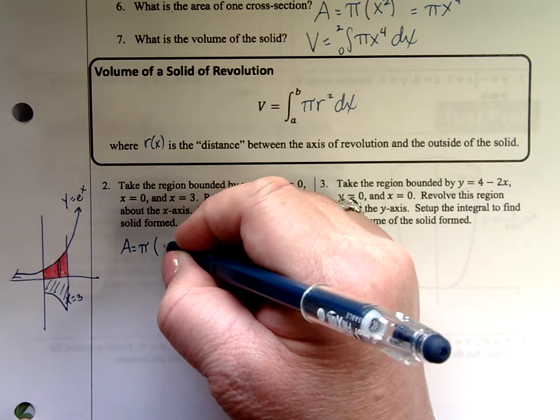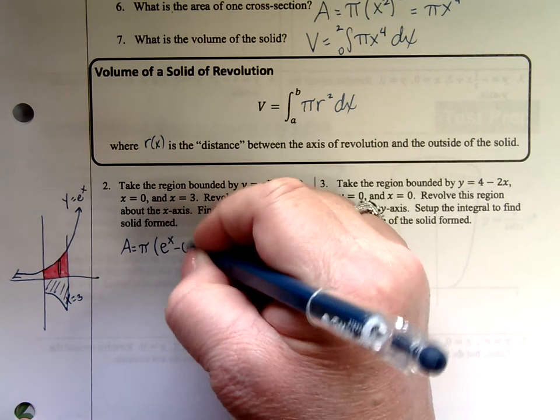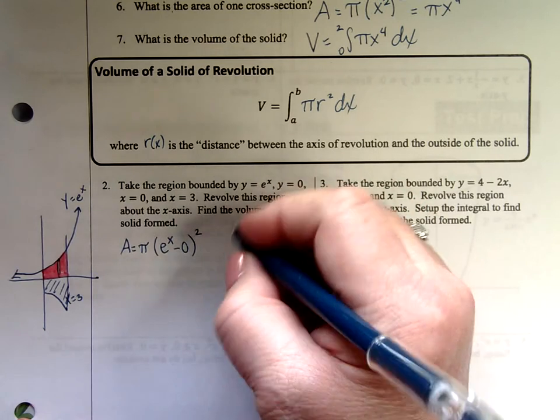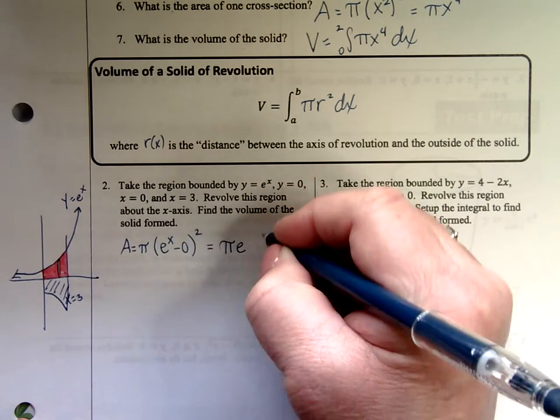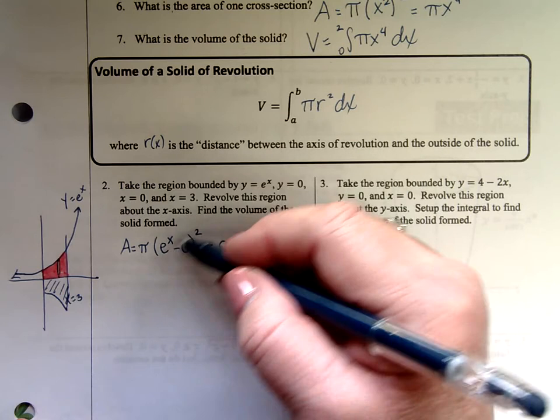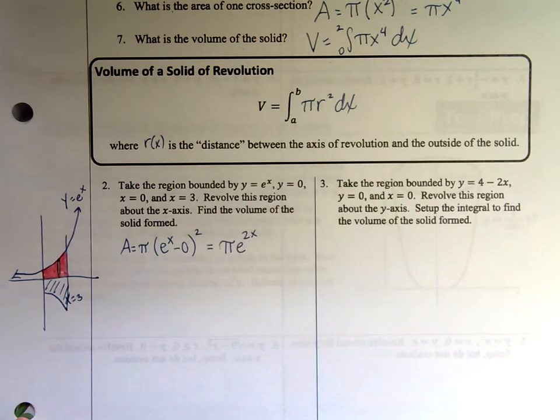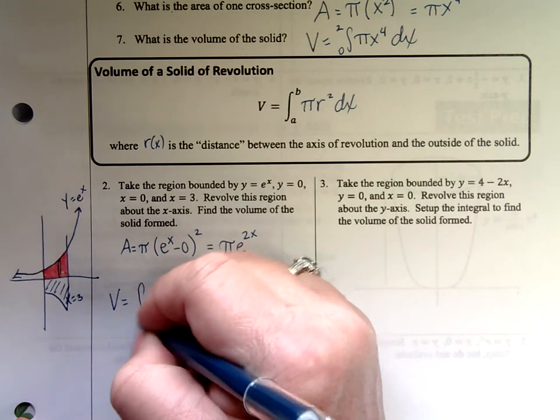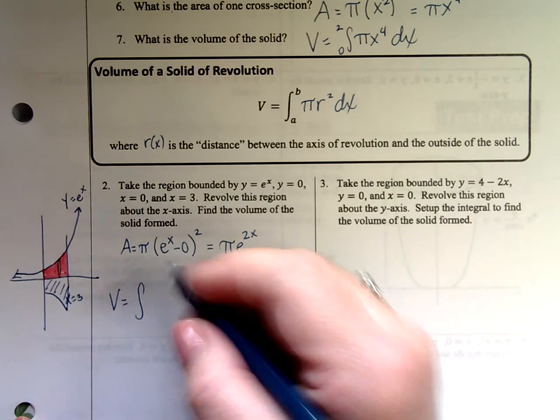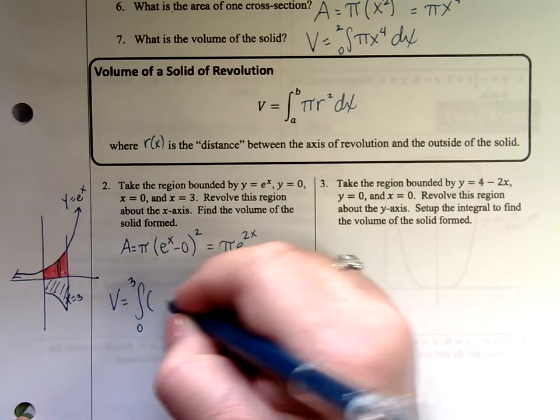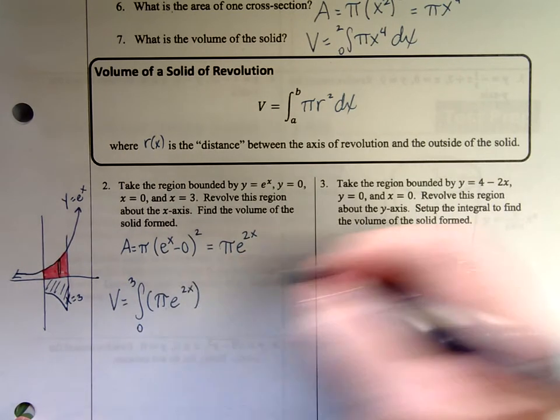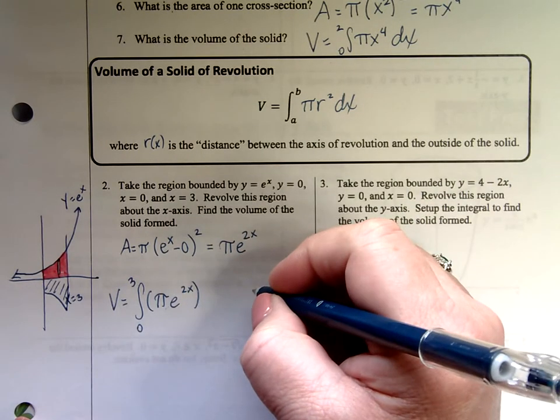So it is the top is e to the x, the bottom is 0, and that's being squared. All right, so here's what I got. I got pi, e to the x squared is e to the 2x. That's my area. And so now I'm ready to integrate to find the volume. My volume is going to be the integral going x values are 0 to 3 of my area pi e to the 2x dx.